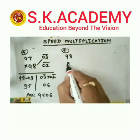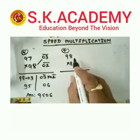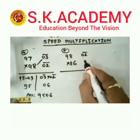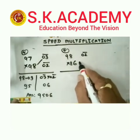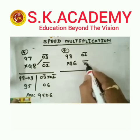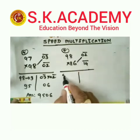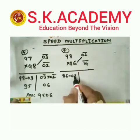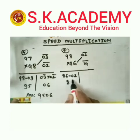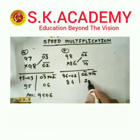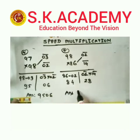Another example: 98 multiplied by 86. Subtract base 100 from 98 — it is bar 02. And 86 minus 100 is bar 14. Take this diagonal: 86 minus 02 gives 84. And 02 multiplied by 14 is 28. So we get the answer 8428.